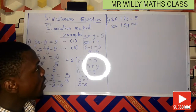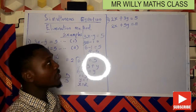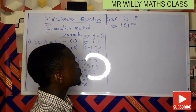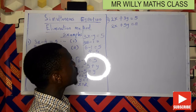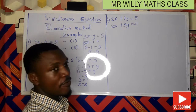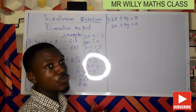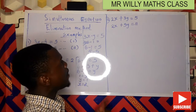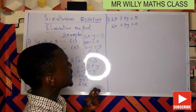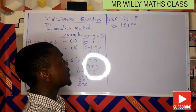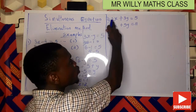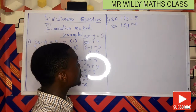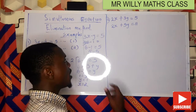Let's move to the second example. We have 2x plus 3y equals 5, and 2x plus 5y equals 11. Looking at these two equations using the elimination method, we can see that variable x has a similar coefficient of 2 in both equations.